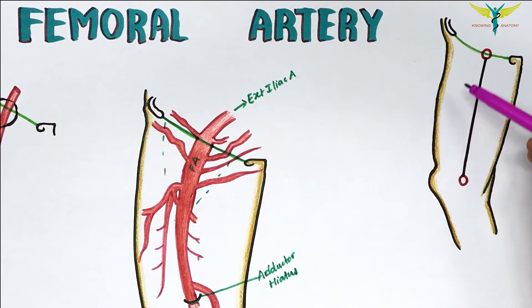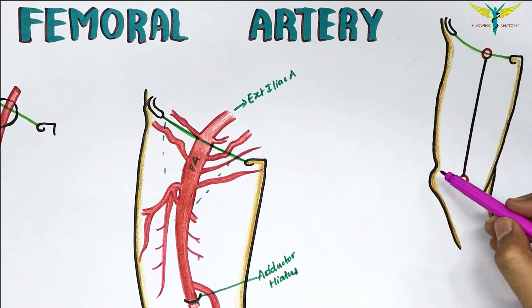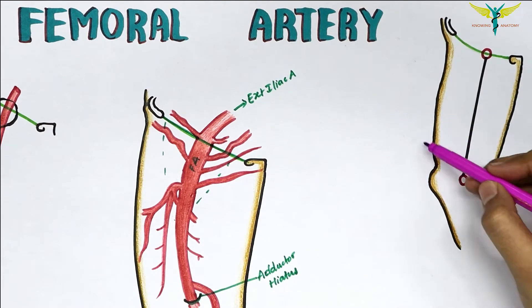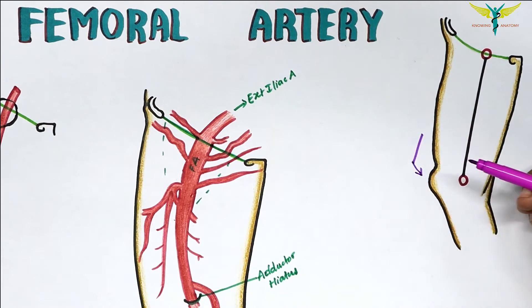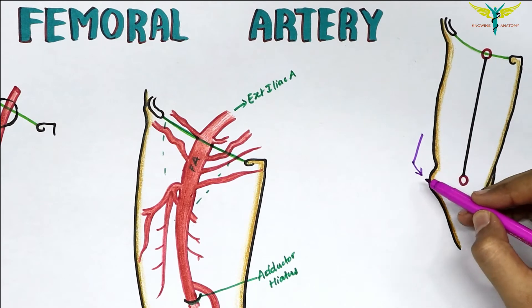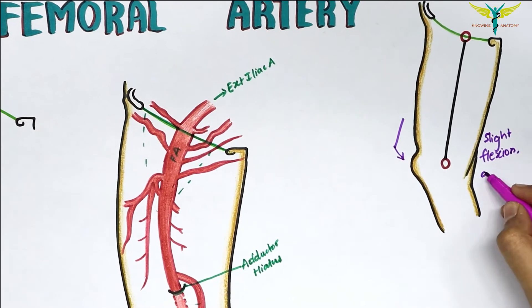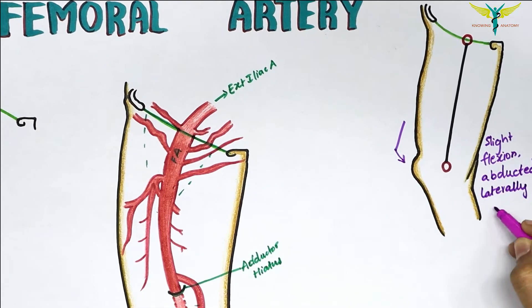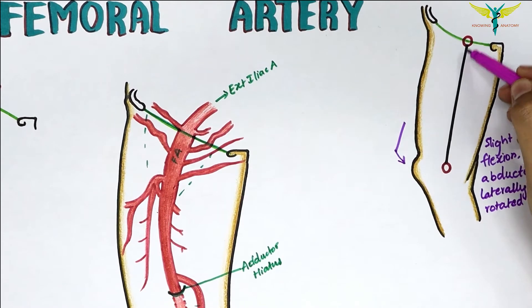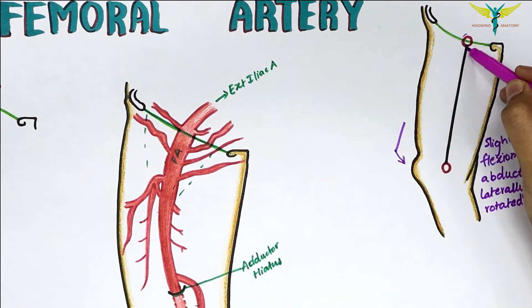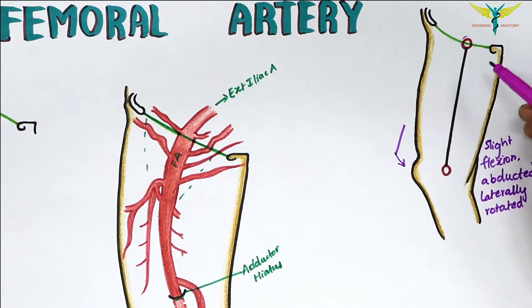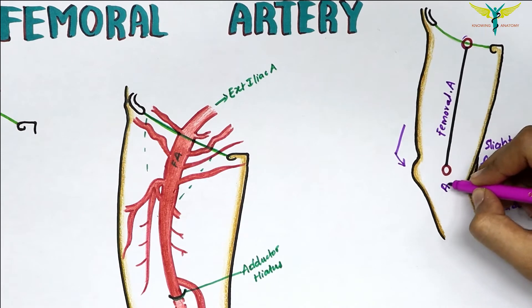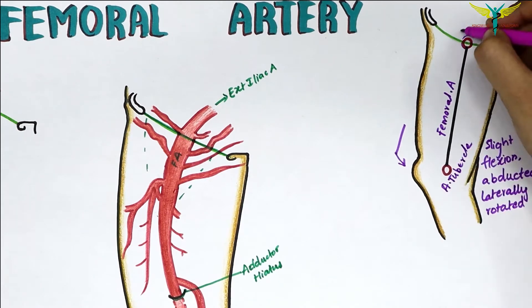A simple surface marking is done when the thigh is in a position of slight flexion, abducted and laterally rotated. The upper two-thirds of a line drawn from the inguinal ligament at the mid inguinal point to the adductor tubercle represents the femoral artery.